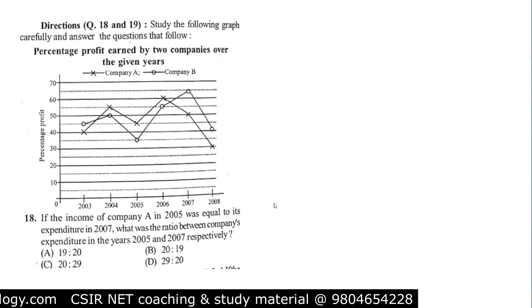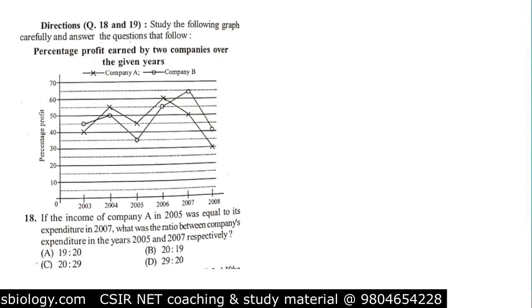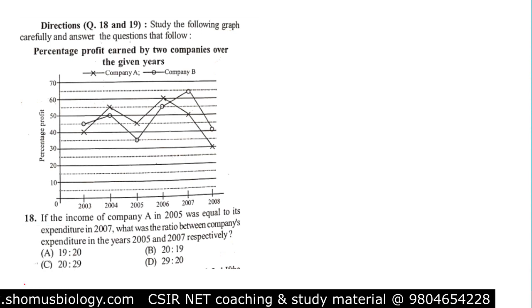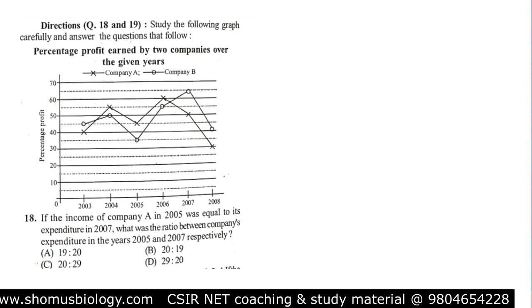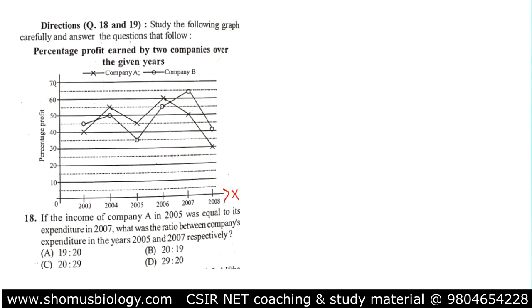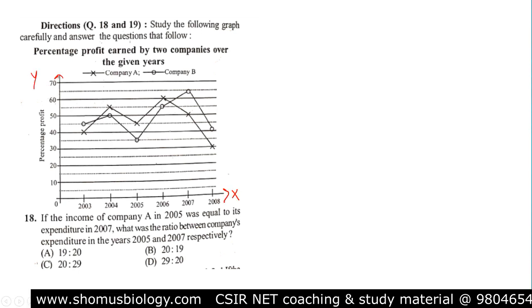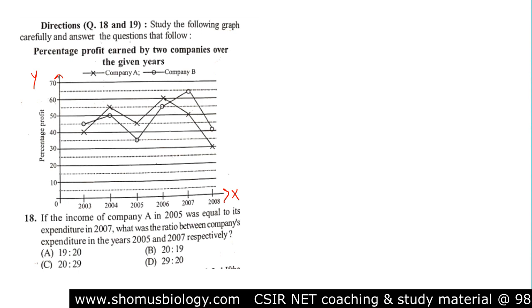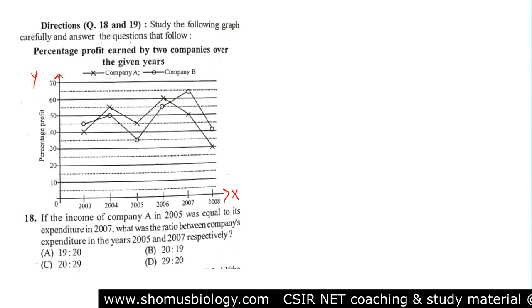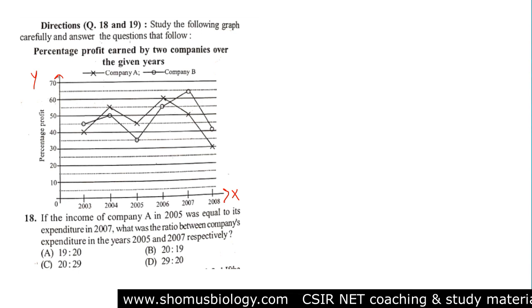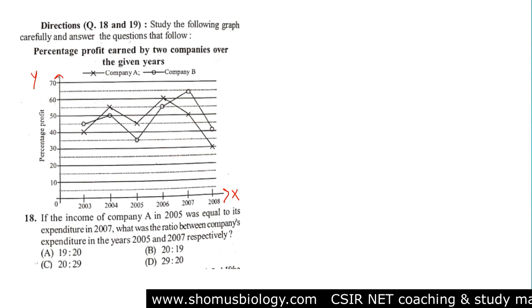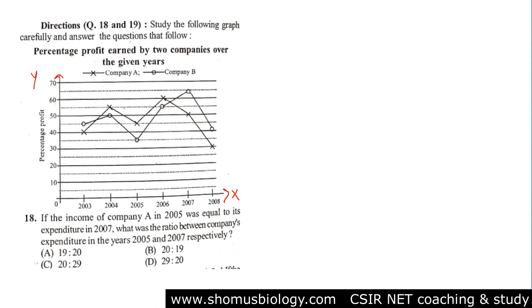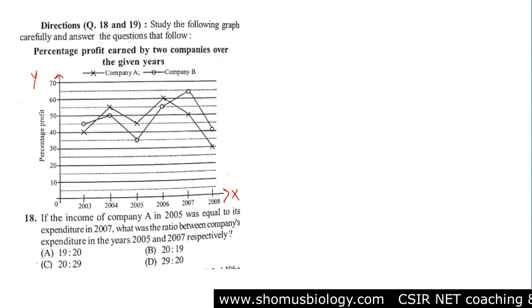It may take some time to judge the data, but you need to be very good at understanding the graph. To understand any graph, you always need to understand the relationship between the x-axis and y-axis, because in any kind of graph there will be an x-axis and y-axis. The graph can be represented as a bar chart, pie chart, or any kind of chart, but there is always an x and y relationship.